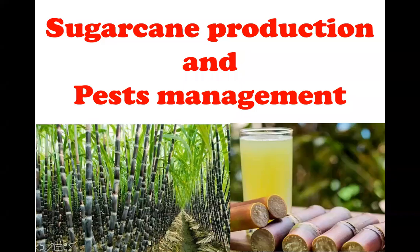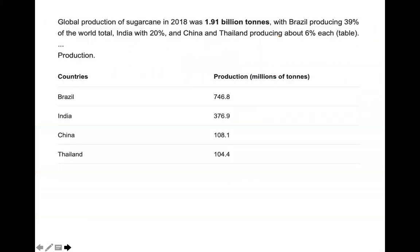Hello friends, today we will be discussing sugarcane production and pest management. Sugarcane is one of the most important crops globally, with around 1.91 billion tons produced. India accounts for the second position after Brazil. Brazil produces 746 million tons, accounting for 39 percent, whereas India accounts for 20 percent of global sugarcane production.